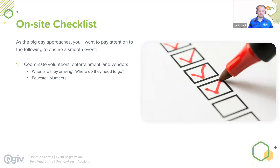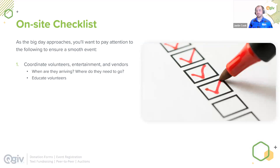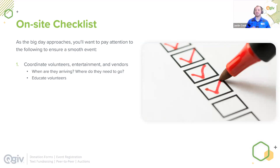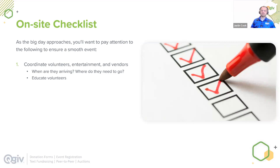The first checklist item is volunteer, entertainment, and vendor coordination. You're most likely already heavily involved, but this is about crossing your T's and dotting your I's. For example, when are they arriving? When should they start warming up food? When should volunteers show up and start working their sections? Make sure they know where to go, where the outlets are to plug into, and the Wi-Fi information so they can start working at your event.